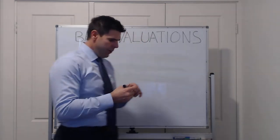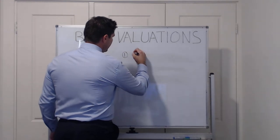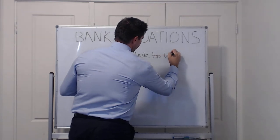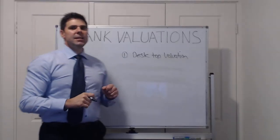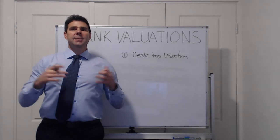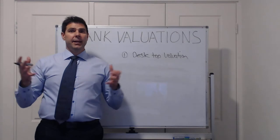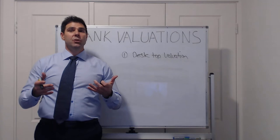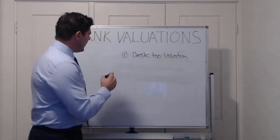There are three types of valuations that banks generally use. Number one is a desktop valuation. A desktop valuation is where the bank valuer sits in front of the computer, accesses all the data, the comparable sales, your property—meaning the size of the land, what it last sold for, the size of the dwelling—to come up with a valuation figure. That's one type of valuation.